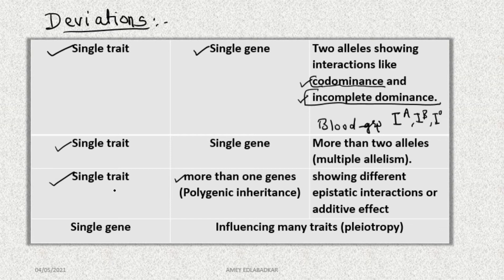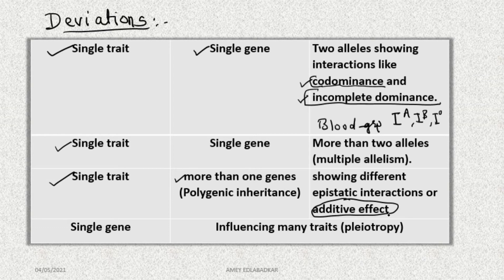Another deviation: a single trait or character is now controlled by more than one gene — for example, human skin color is polygenic inheritance, as is degree of intelligence and height. These are all expressed with an additive effect, where the number of dominant genes changes the expression. Then there is pleiotropy — a single gene influencing many traits, where one gene controls multiple characters. These are all the deviations we will study.